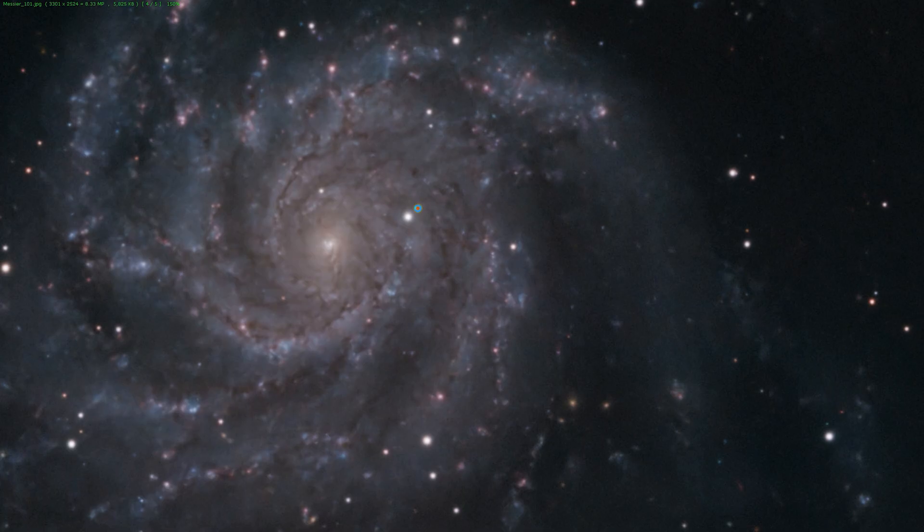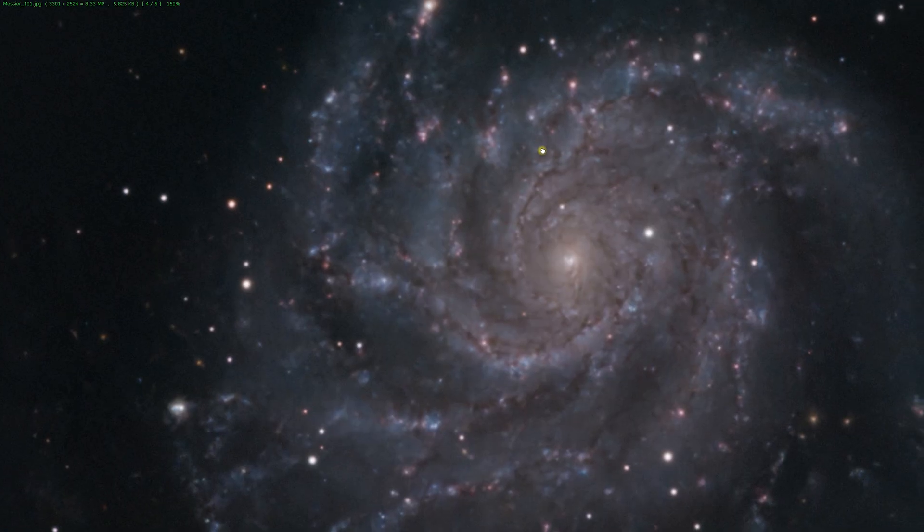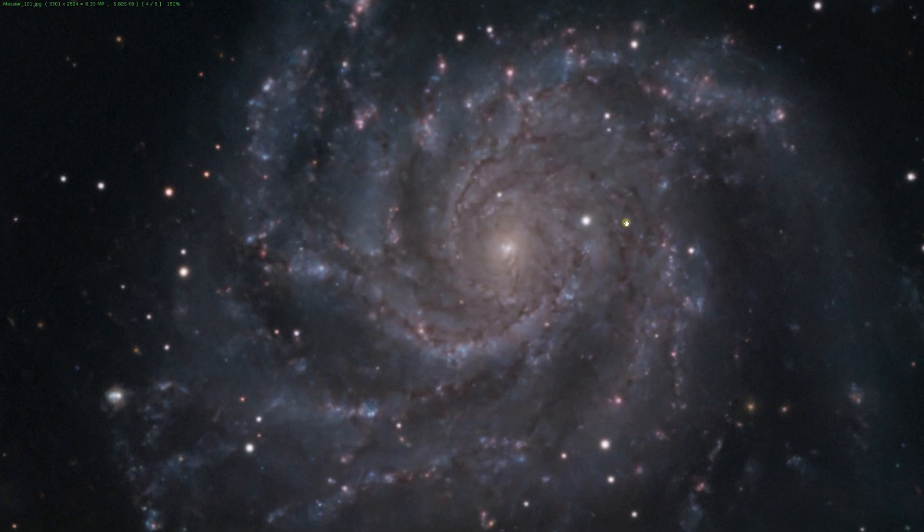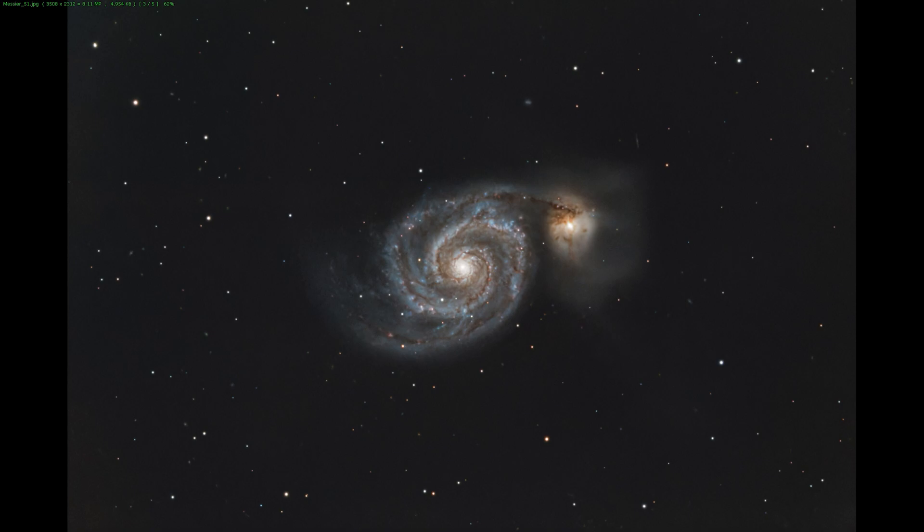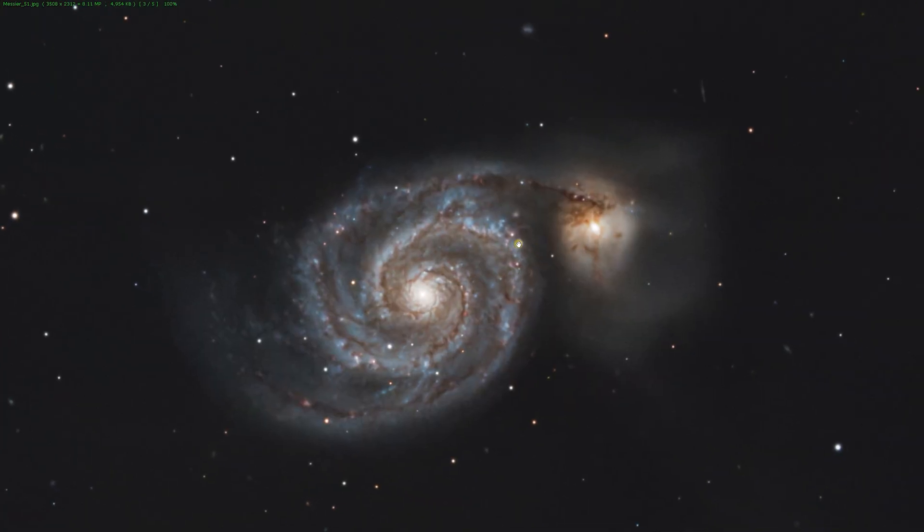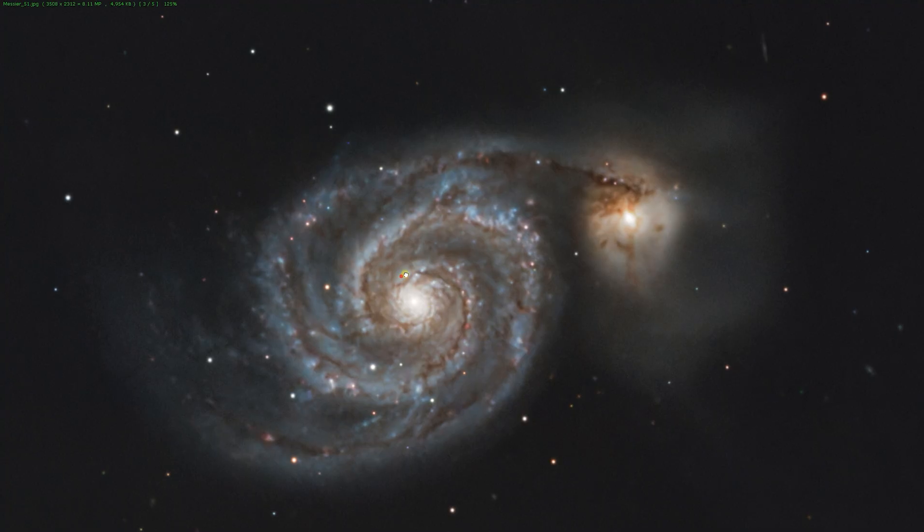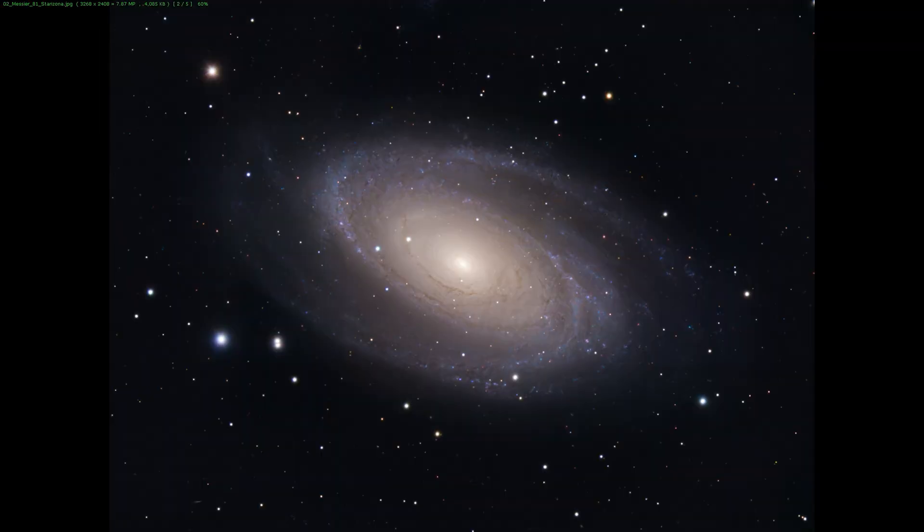And talking about the details, once again this image was taken under Bortle 6 sky from the city. However, just under three hours of exposure time I got pretty decent amount of details on the galaxy and I'm really happy with the results I got using it. And here is just two hours of exposure time on the Messier 51 galaxy also taken under Bortle 6 sky using the Starizona reducer.